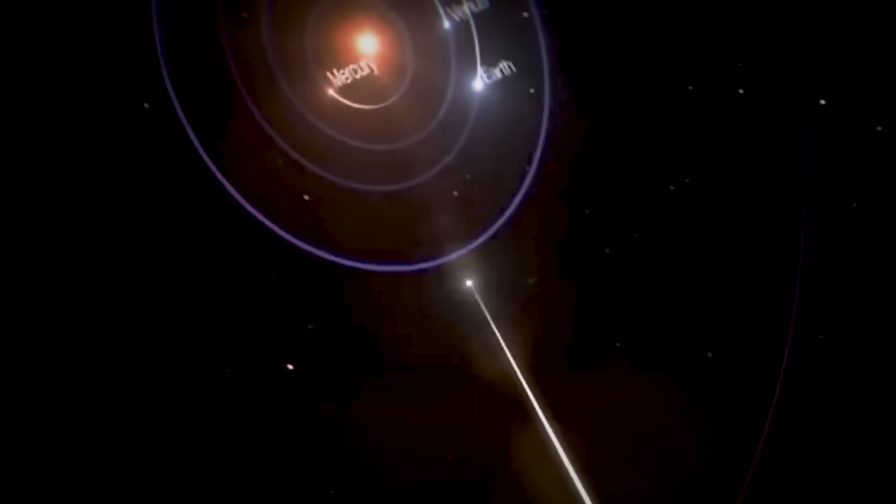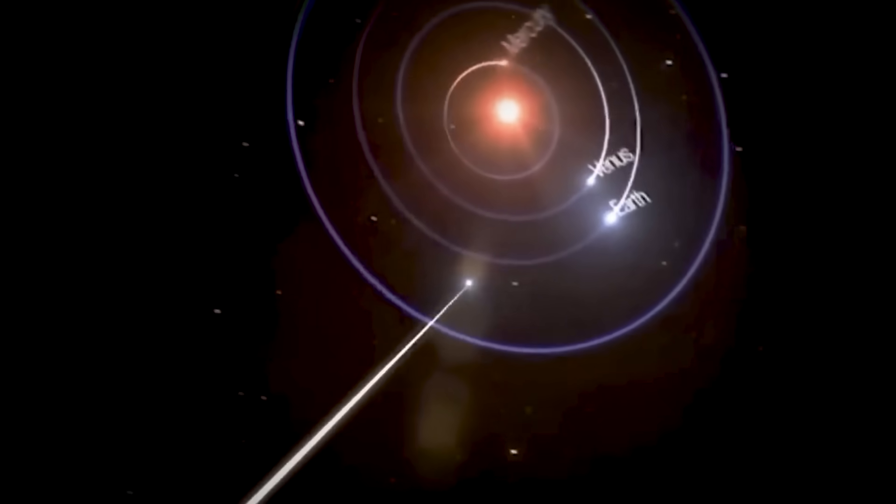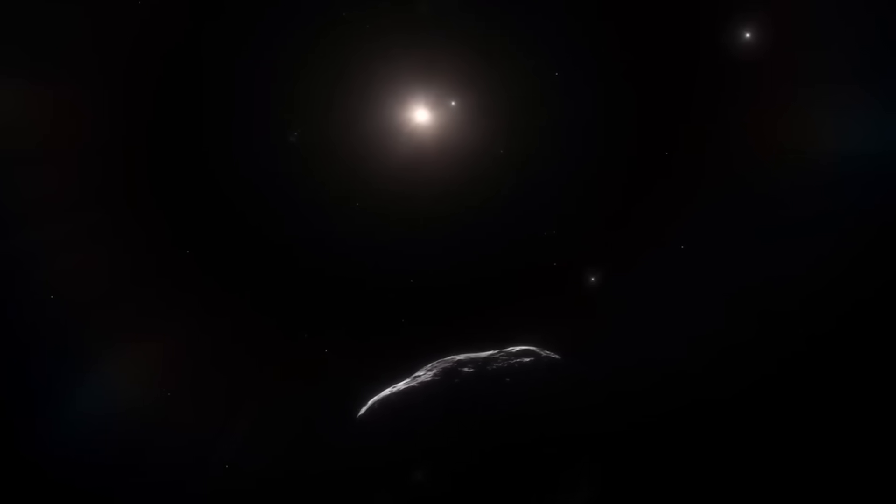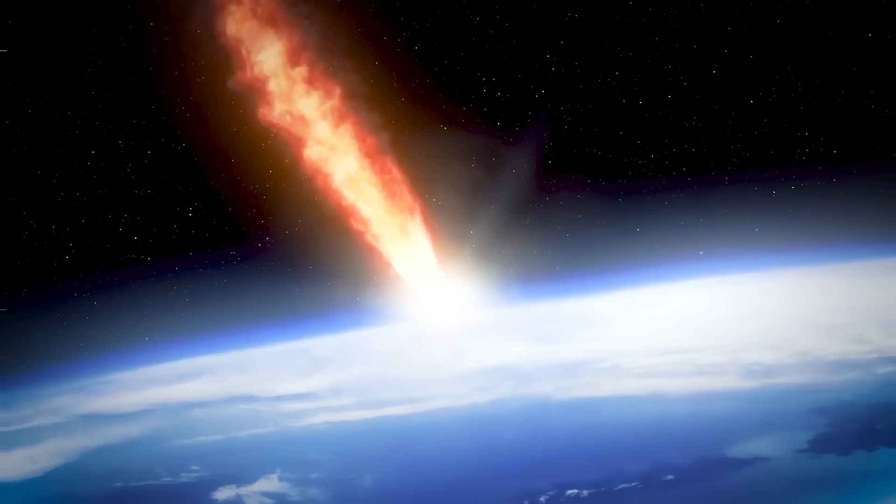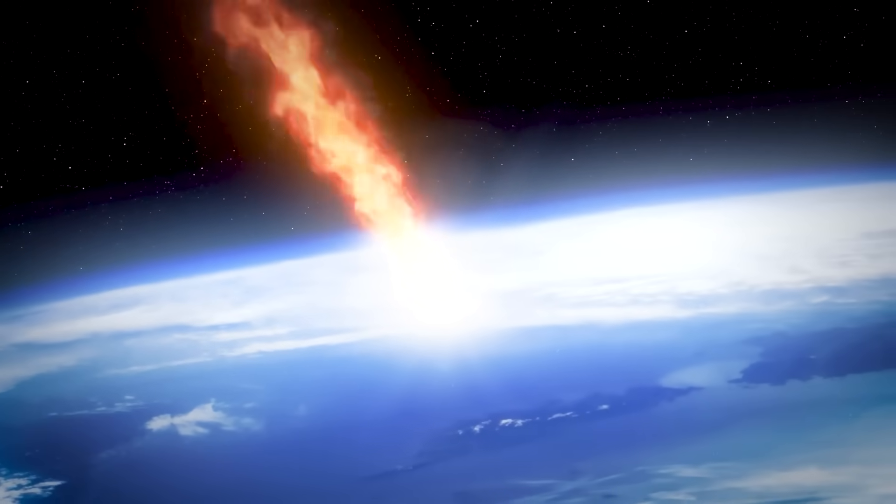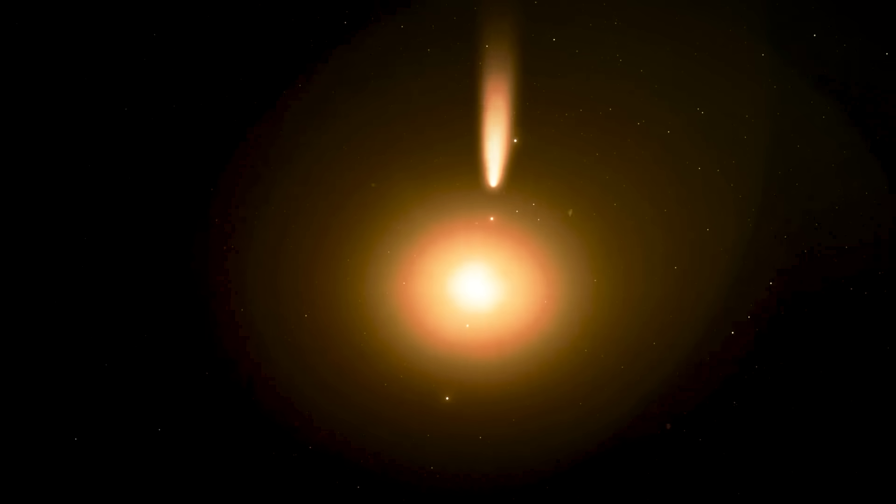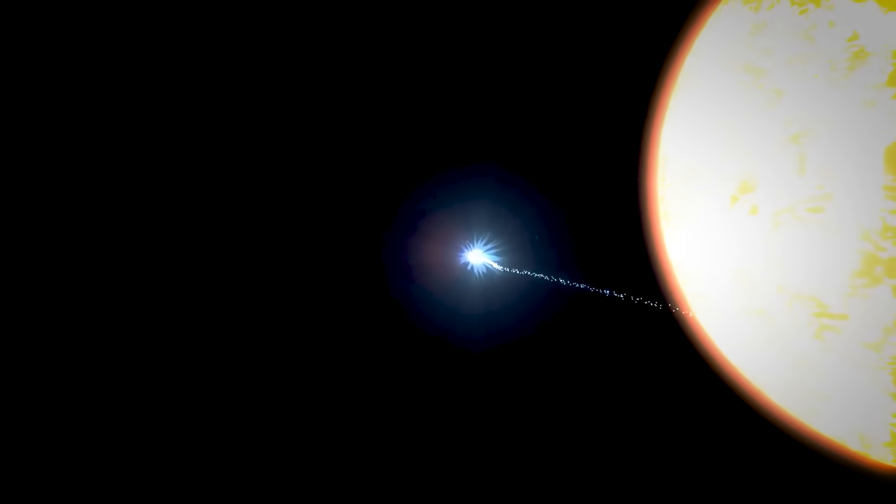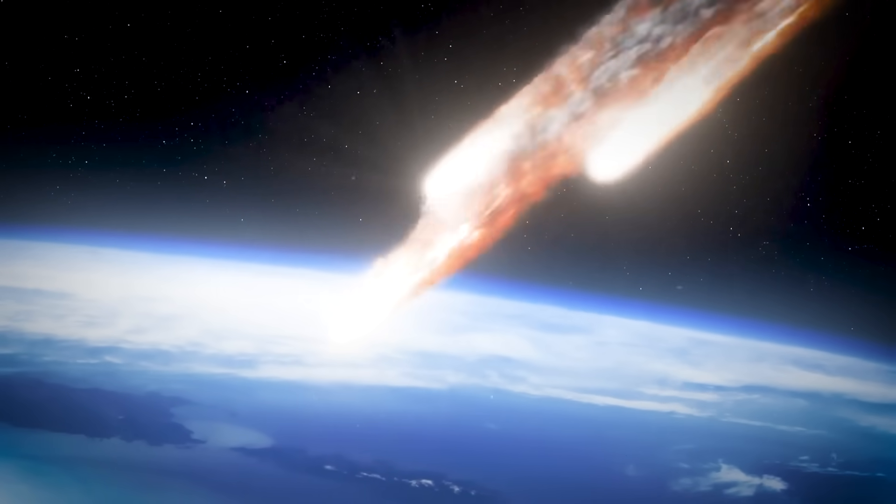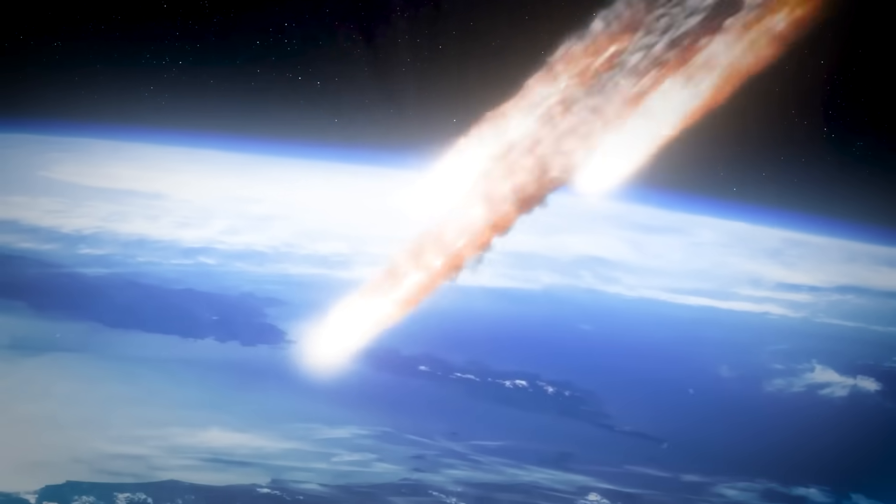But before we explore what makes this object so terrifying to scientists, we need to understand something most people don't realize about interstellar visitors. Most space rocks follow predictable patterns. Comets from our solar system behave like clockwork. They heat up as they approach the sun, develop tails that point away from our star, follow orbits we can calculate centuries in advance. We've been studying these cosmic snowballs for hundreds of years and they rarely surprise us anymore.